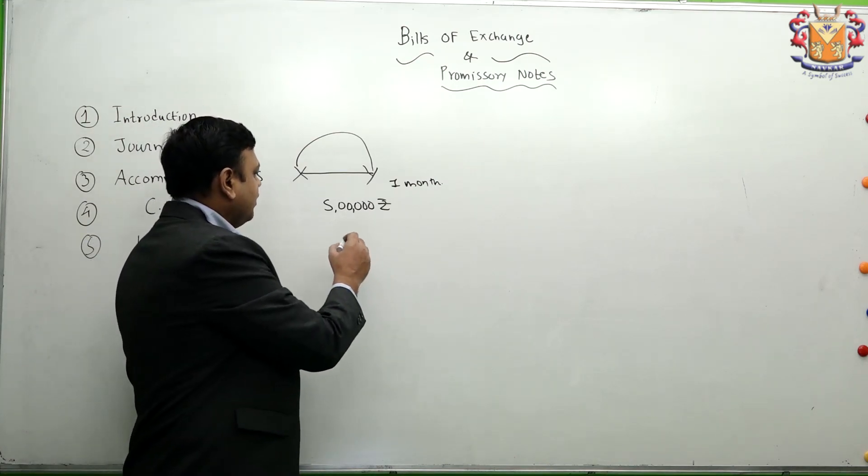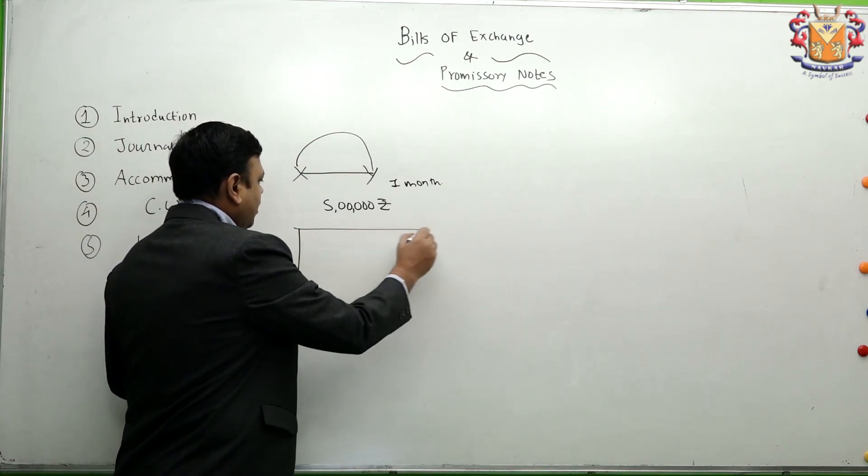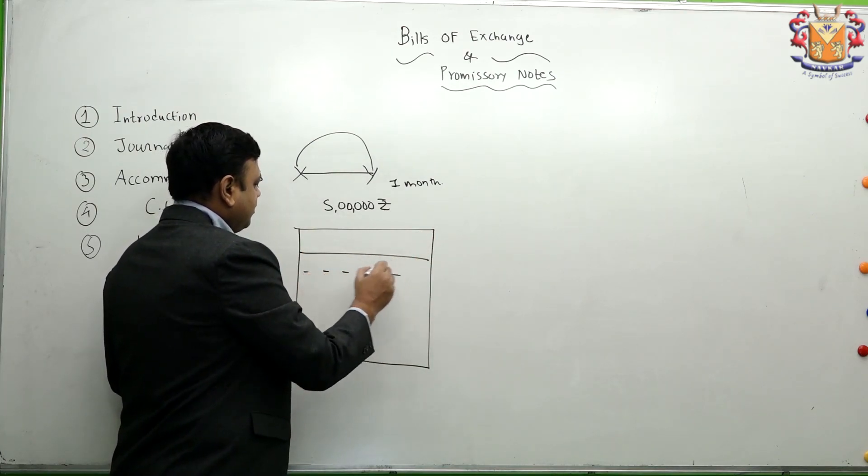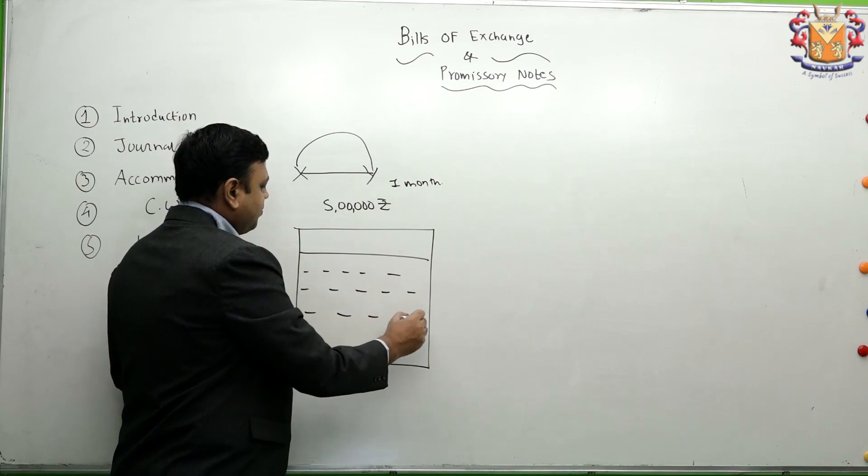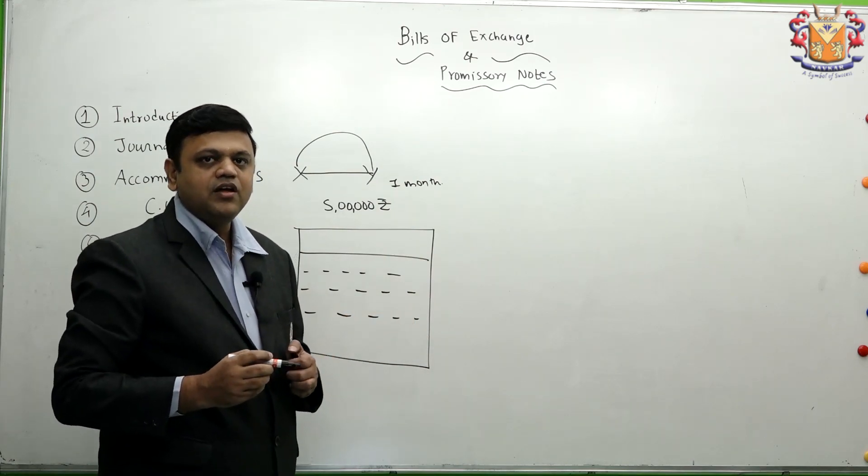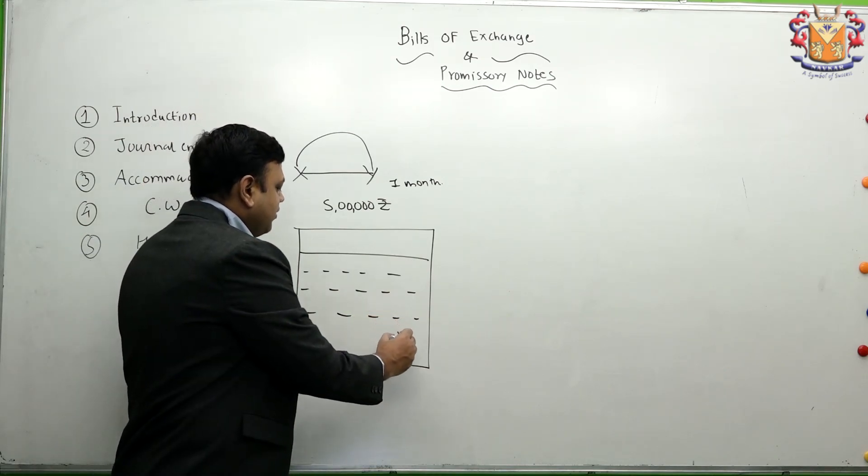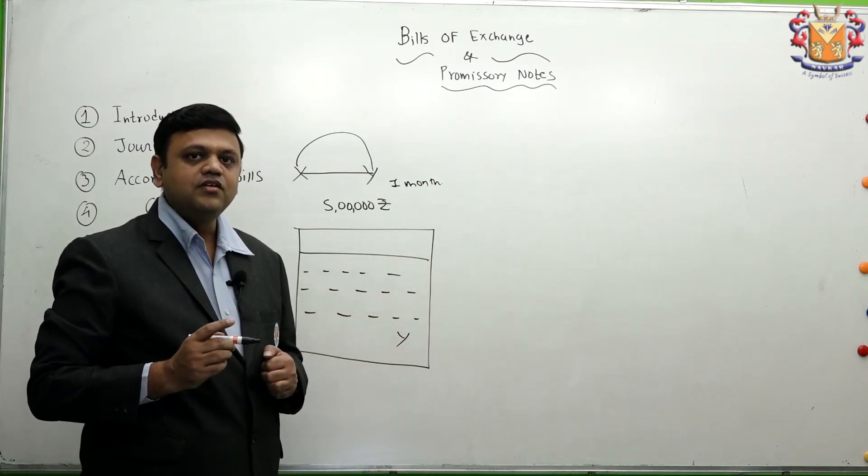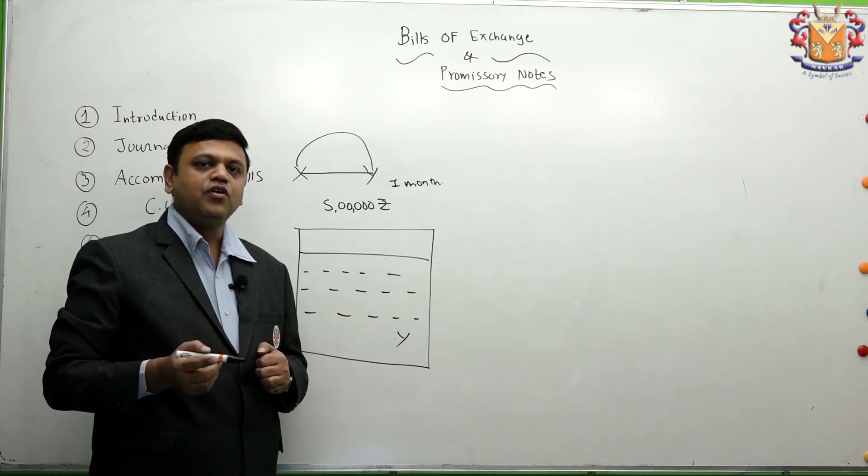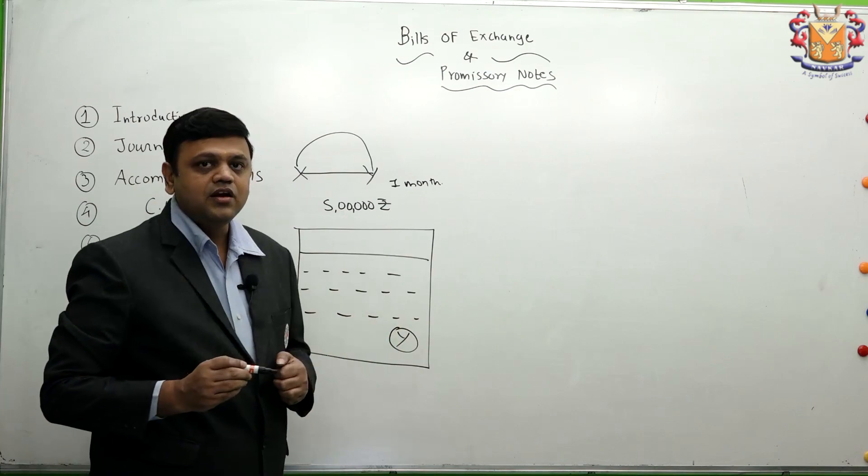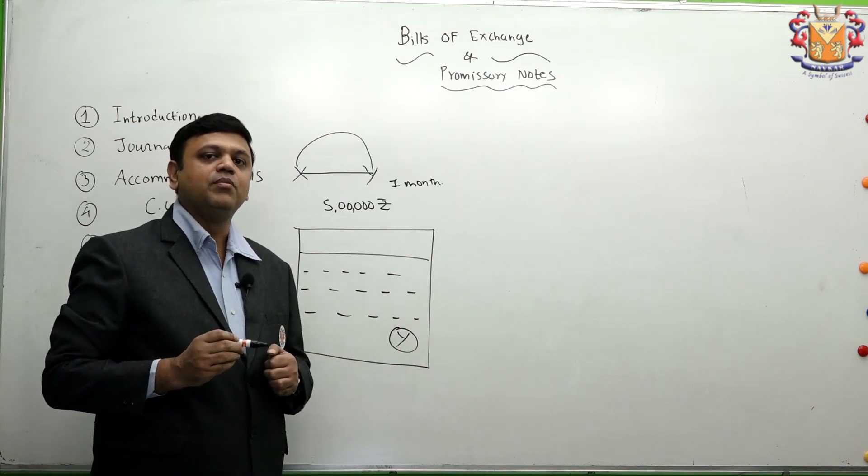And so X draws a bills of exchange, a document in writing in which X has written something and it is presented to Y. Mr. Y, are you agree to make the payment within one month? Mr. Y agrees, then Y has to sign the same. This bill is drawn by X on Y and is signed by Y, so that it becomes now not a draft, but a bills of exchange.